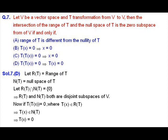Question number 7: let V be a vector space and T be a linear transformation from V to V itself. We have to find a condition such that the intersection of the range space of T and null space of T is the zero subspace of V, if and only if that condition. We have four choices A, B, C, D, and we can easily check that A, B, C cannot be that condition, so only D is going to be that condition.